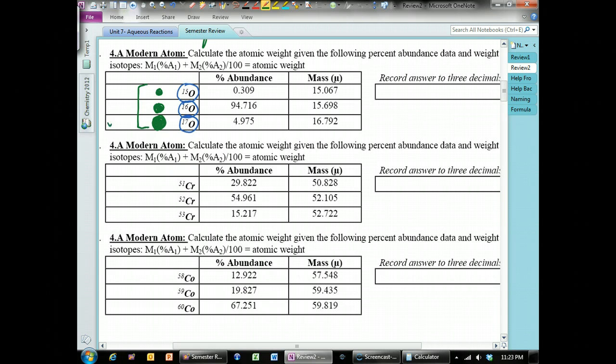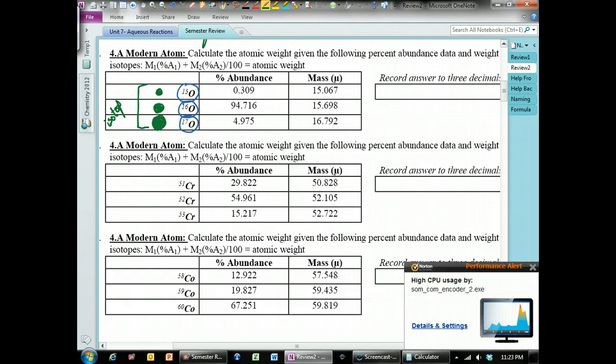Isotopes are atoms that have a different mass. The reason why they have a different mass is because they have a different number of neutrons. Oxygen 16 has an extra neutron. Oxygen 17 has an extra neutron.